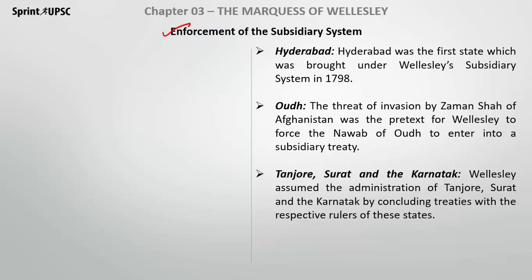Now let's talk about how enforcement of the Subsidiary Alliance System happened. The first states were Hyderabad, Awadh, Tanjore, Surat, and Karnataka. Hyderabad was the first state brought under the Subsidiary Alliance System in 1798. In the second case, Awadh signed a subsidiary alliance treaty, and at the end of the day Awadh was given as a protected state to the British.